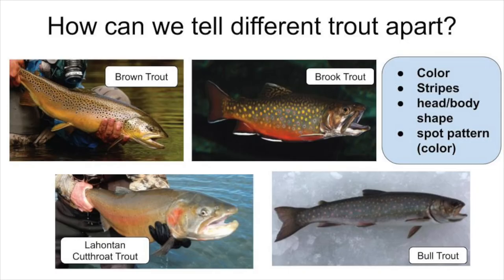There are many different kinds of trout in the world. The Lahontan cutthroat trout is native to Nevada and is the Nevada state fish. The Lahontan cutthroat trout is threatened; however, work is being done to restore their population in Nevada.